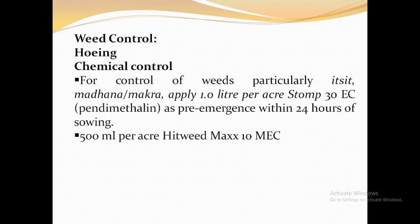Next is weed control. Before the first irrigation, use tractor-mounted cultivators or hand-hoeing for weeding. For chemical control, to control weeds, particularly before emergence, apply one liter of pendimethalin as a pre-emergence spray within 24 hours of sowing. Spray 500 ml per acre mixed by dissolving in 150 liters of water.